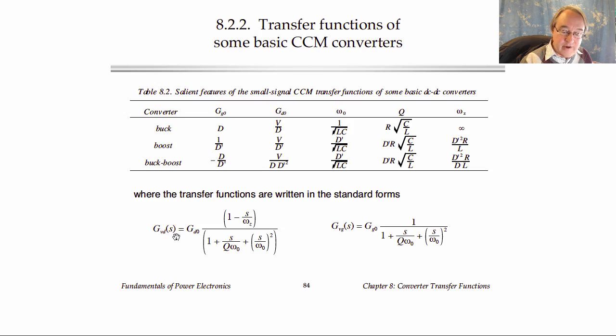GVD, the control to output transfer function, will have the same two poles, it will have a different DC gain, and it may have a right half plane zero. In the case of the boost and the buck-boost converters, we have a right half plane zero, and in the buck converter we don't.